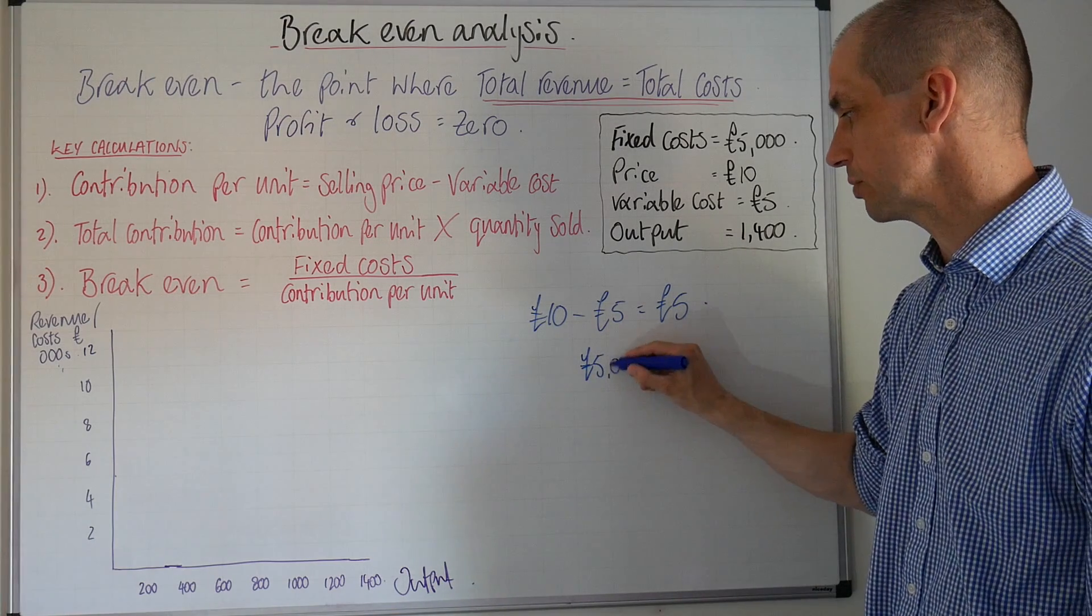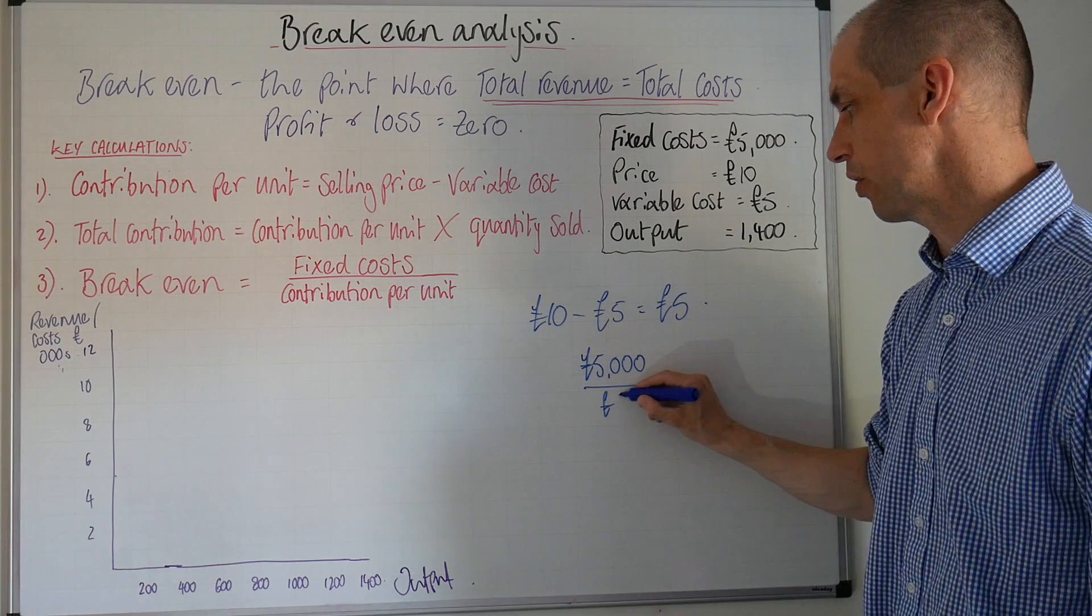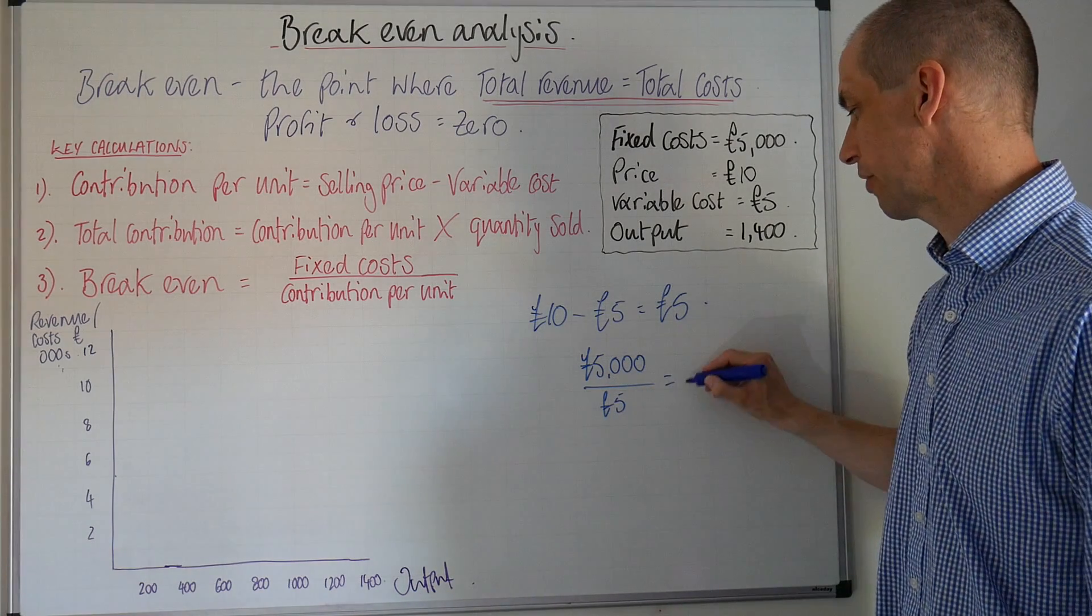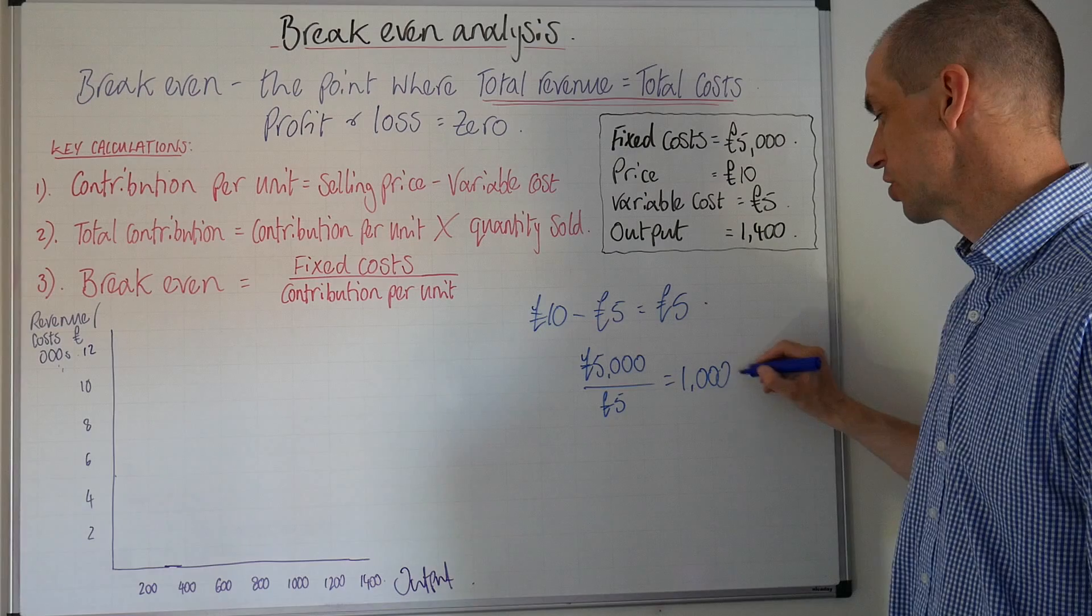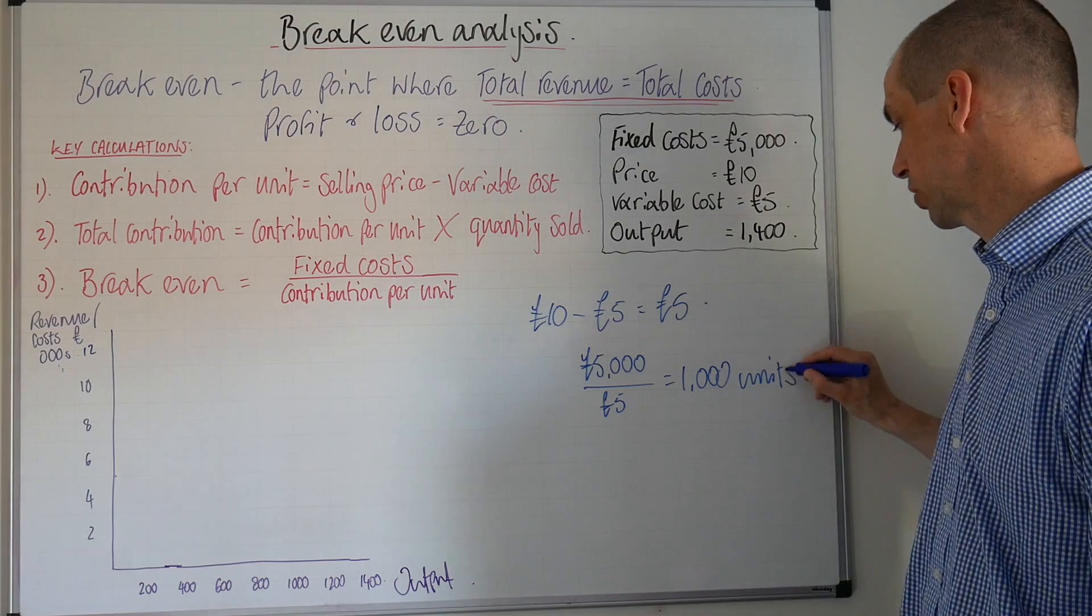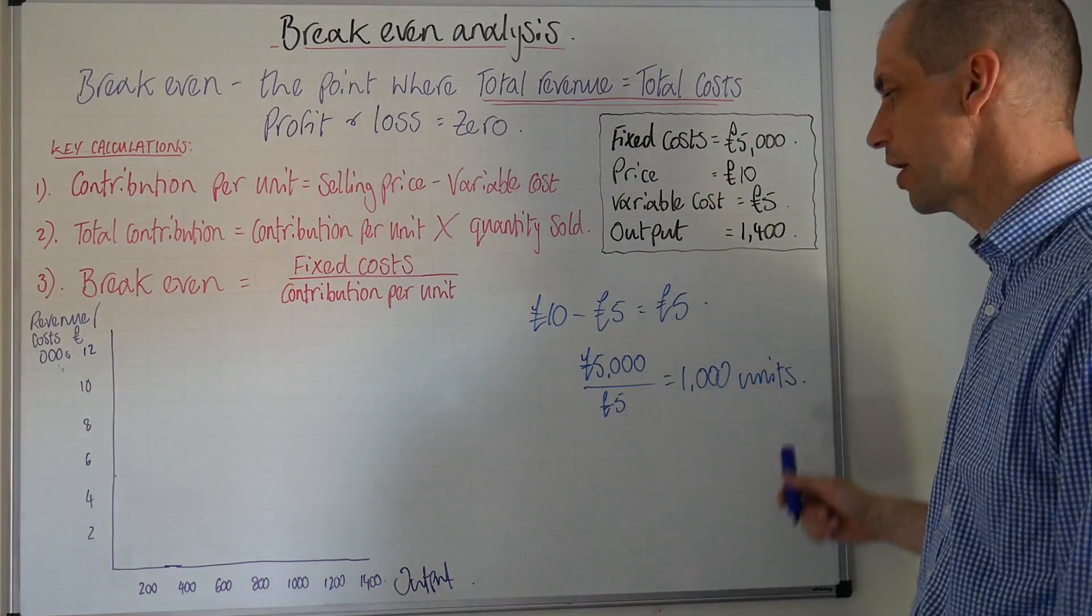So now all we need to do is put in £5,000 and divide that by £5. As we divide that by £5, that will tell us that we have a break-even point of 1,000 units. Nice and straightforward, isn't it?